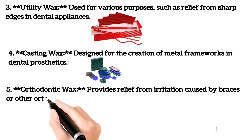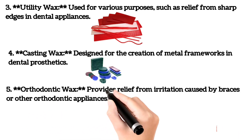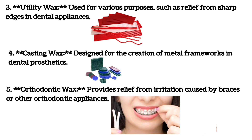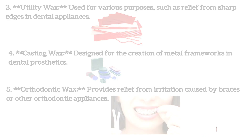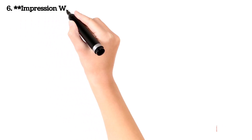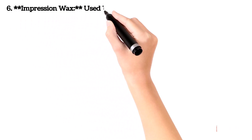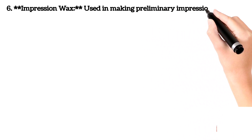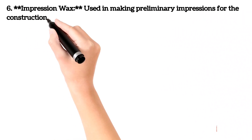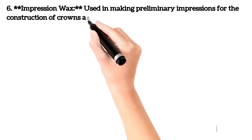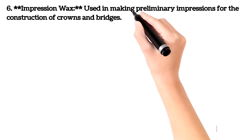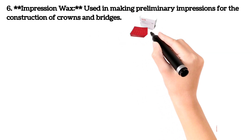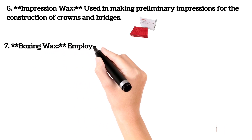Number 5: Orthodontic Wax. Provides relief from irritation caused by braces or other orthodontic appliances. Here you can see the picture. Number 6: Impression Wax. Used in making preliminary impressions for the construction of crowns and bridges. Here is the picture of impression wax.